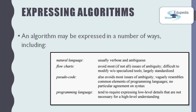How do we express algorithms? We can use a number of ways: natural language, flowchart, pseudocode, or a programming language itself. Natural language is usually verbose and ambiguous. Flowcharts avoid most issues of ambiguity but are difficult to modify without specialized tools, though largely standardized. Pseudocode also avoids most ambiguity and vaguely resembles common elements of programming languages, but with no particular agreement on syntax. Programming languages tend to require expressing low-level details not necessary for high-level understanding. Most people use flowcharts and pseudocode before implementing in a programming language.